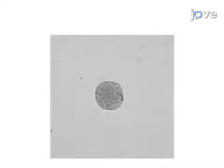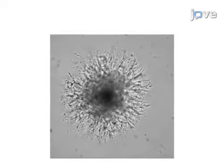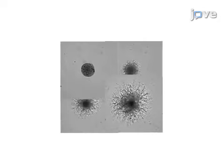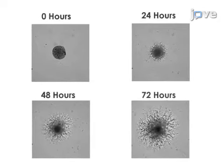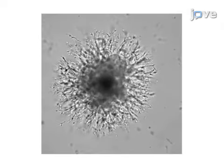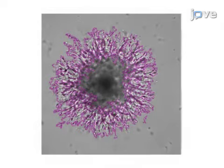Next, the tumour spheroid invasion is monitored at intervals over a period of 72 to 96 hours, during which image acquisition is performed either automatically on a cytometer or manually on a microscope. The final step is to analyse tumour cell invasion through either an automated cytometer or imaging software.